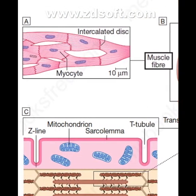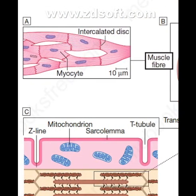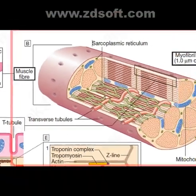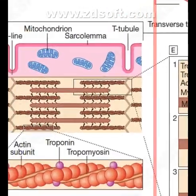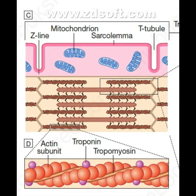The A picture shows a myocyte with intercalated disc. The B diagram shows a muscle fiber with sarcoplasmic reticulum, mitochondria, and myofibril-like units of 1 micrometer diameter, as well as transverse tubules. The C structure shows the Z-line, mitochondria, sarcolemma, and T-tubule.